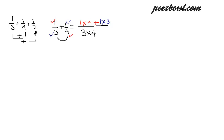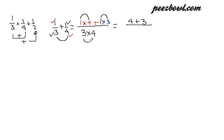Let us see the result of this addition. At the numerator place we have 1 multiplied by 4, which is 4, and 1 multiplied by 3, which is 3. For the denominator, we have 3 multiplied by 4, which is 12. So the result of this addition is 4 plus 3 over 12, which is 7/12.